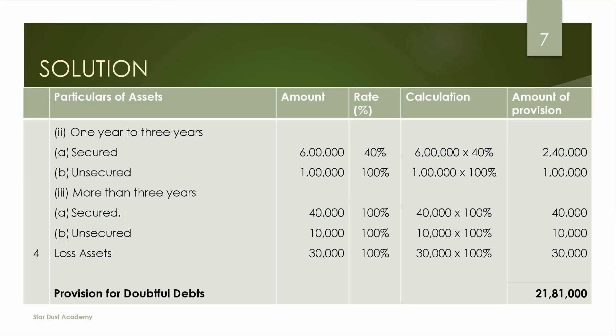For Doubtful Assets 1 year to 3 years: Secured 6 lakhs at 40%, Unsecured 1 lakh at 100%. For Doubtful Assets more than 3 years: Secured 40,000 at 100%, Unsecured 10,000 at 100%. Loss Assets: 30,000 at 100%. In all cases, the Unsecured portion of Doubtful Assets is 100%. For more than 3 years, both Secured and Unsecured are 100%.